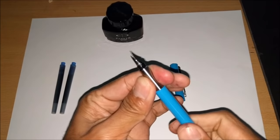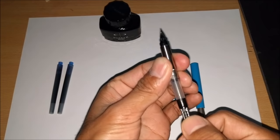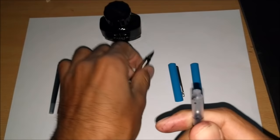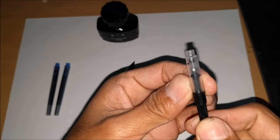So this is our piston ink converter. Let's remove it. If you take a look at this, there is a ball which moves up and down when we move the slider.